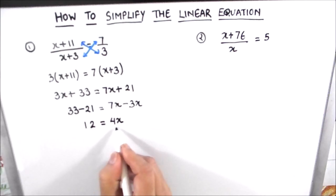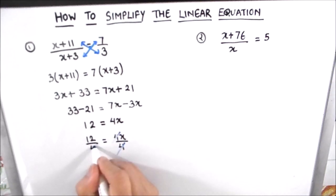Now to find the value of x we are going to divide both sides of the equation by 4. So this is 12 by 4 is equal to 4x divided by 4. This 4 gets cancelled. This is 4 times 1 and this is 4 times 3. So the value of x comes out to be 3.